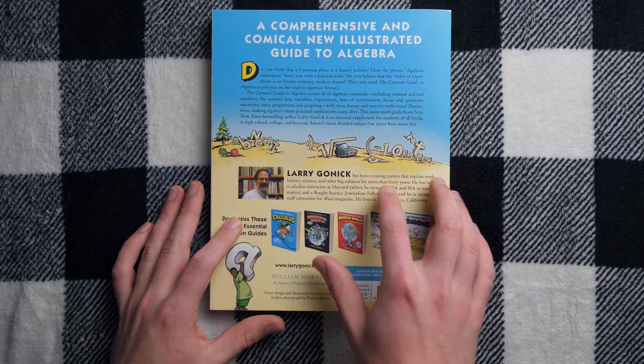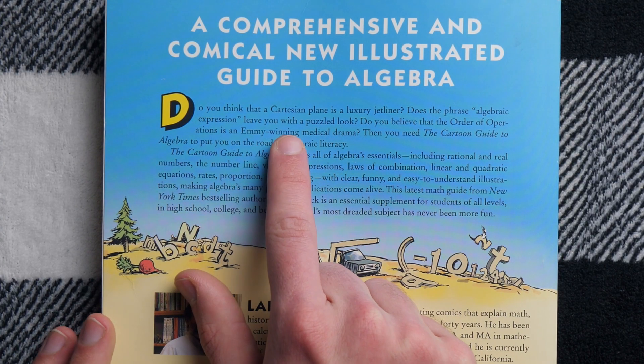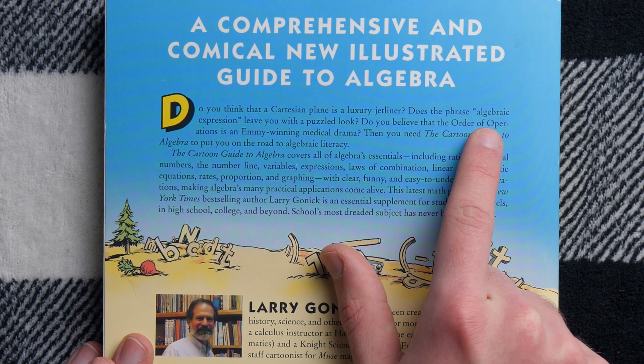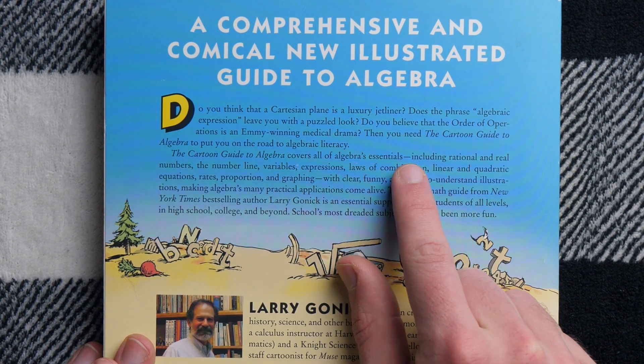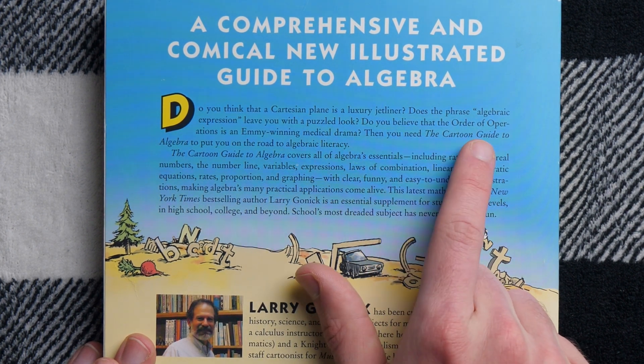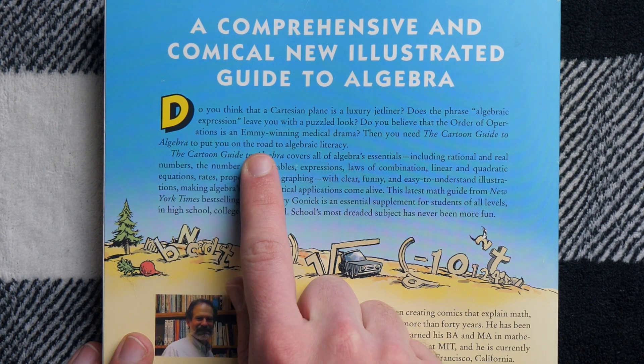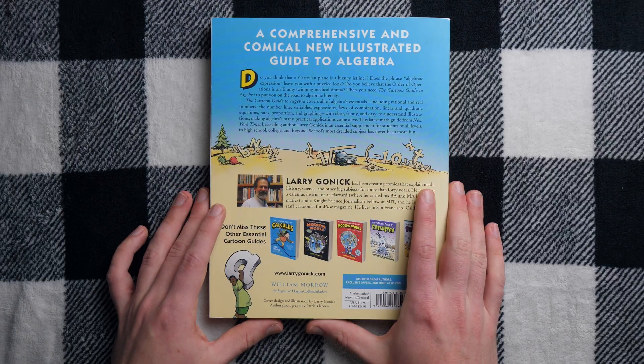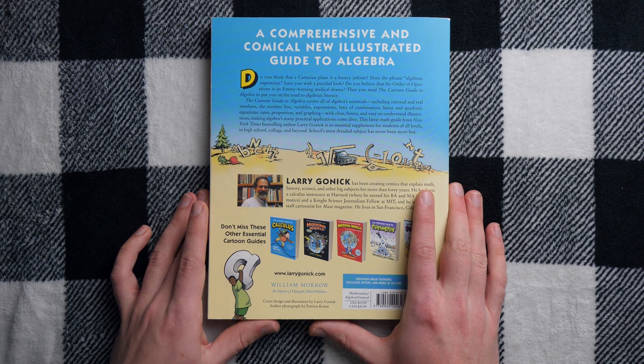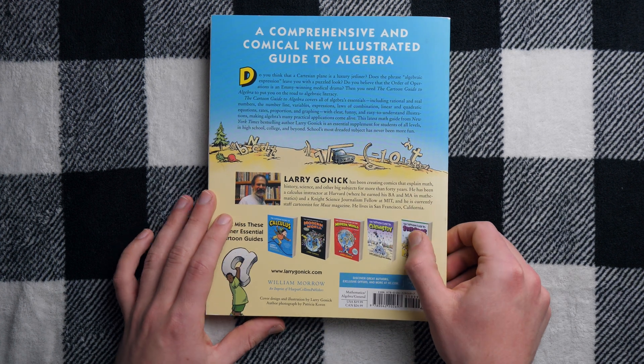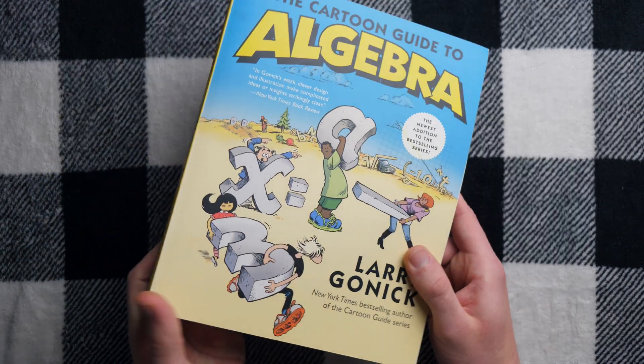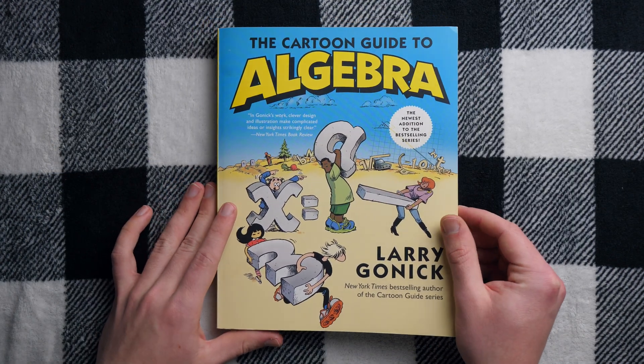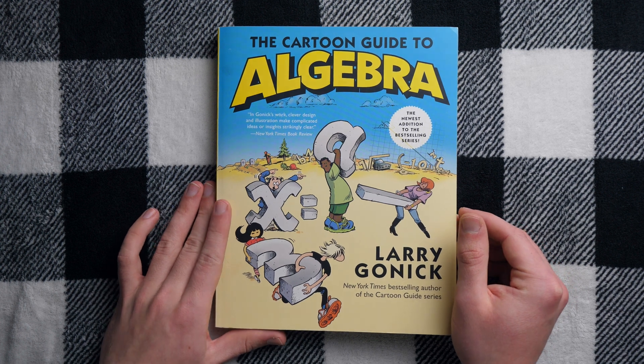And then a nice little blurb here in the back says, do you think that a Cartesian plane is a luxury jetliner? Does the phrase algebraic expression leave you with a puzzled look? Do you believe that the order of operations is an Emmy winning medical drama? Then you need the cartoon guide to algebra.